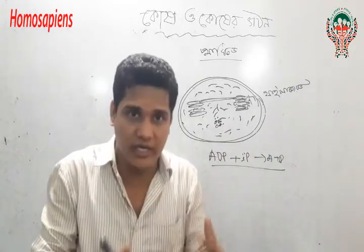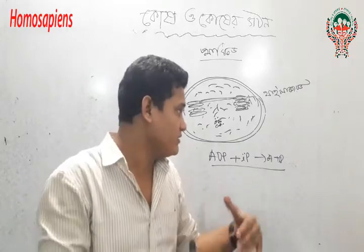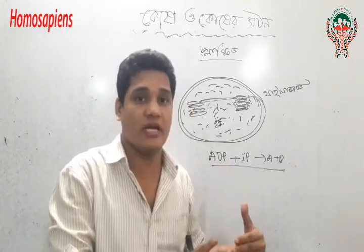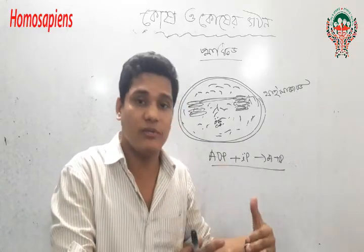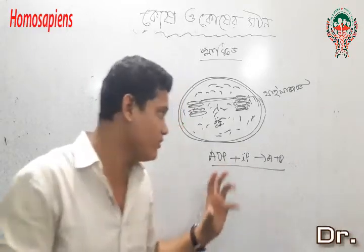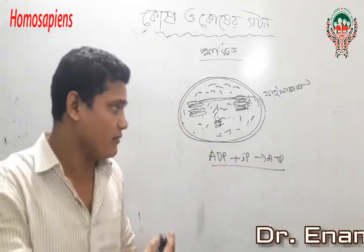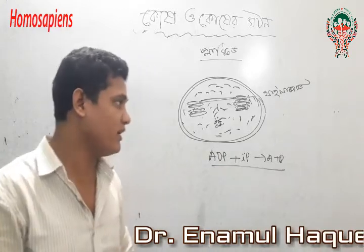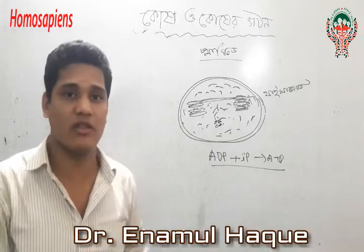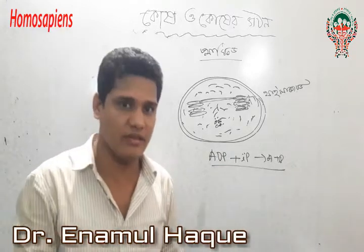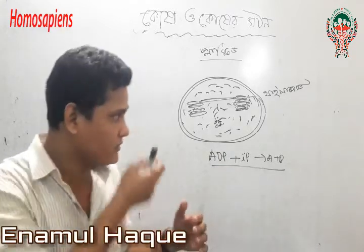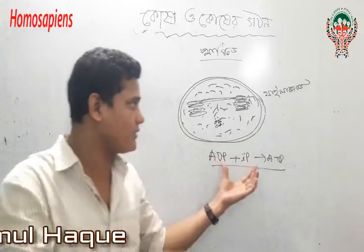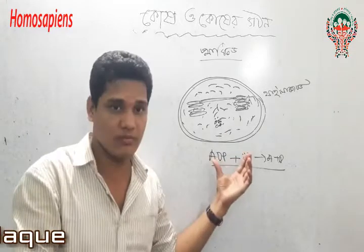It is called cytoplasmic inheritance. When we have the relationship between the people, we have to move on to the basis of the pathology. It is called cytoplasmic inheritance. Here we go with a whole series of bits of DNA.